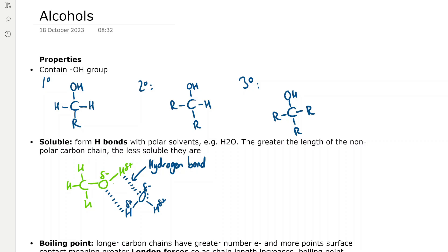Here in this diagram you can see there's a hydrogen bond between the delta-positive hydrogen and the lone pair on the delta-negative oxygen of the water molecule. There's also a hydrogen bond between the oxygen atom in the alkyl group and the water delta-positive hydrogen atom. Make sure when you're drawing hydrogen bond diagrams to label the hydrogen bond, as this comes up in the mark scheme.